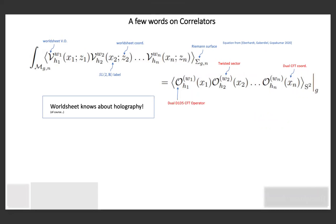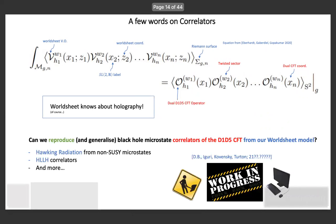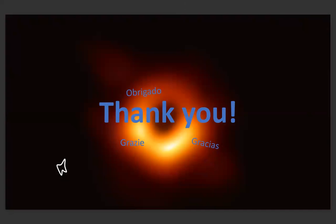Let me say briefly what happens for correlators. Everyone may know that worldsheet correlators are dual to D1-D5 CFT operators and correlators of it. The worldsheet knows about holography. The question that we ask and we're going to work on is: can we reproduce correlators of the D1-D5 CFT from the worldsheet? The answer seems to be yes, and we're working on this. We're using Hawking radiation, reproducing heavy-light-light-heavy correlators, and so on. That's a work in progress. Thank you very much for your attention.